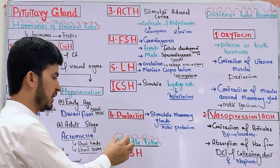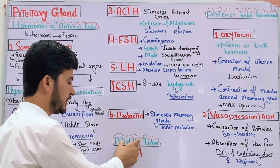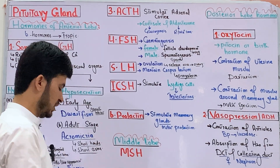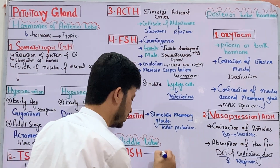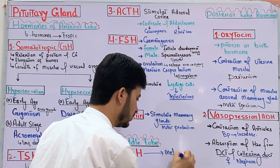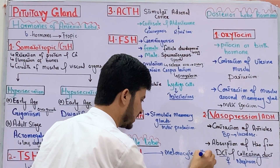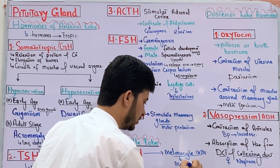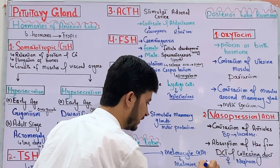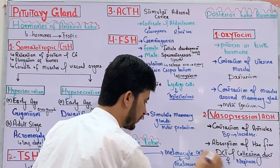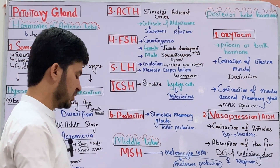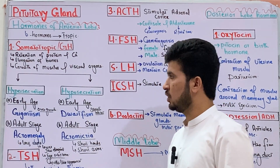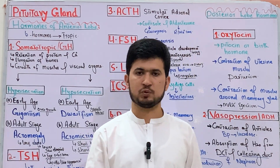The middle (intermediate) lobe secretes MSH — melanocyte stimulating hormone. This hormone stimulates melanocytes, which produce melanin, a pigment responsible for skin color. This concludes the discussion on the pituitary gland structure, development, and its different hormones. Thank you so much.